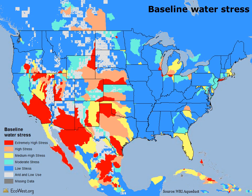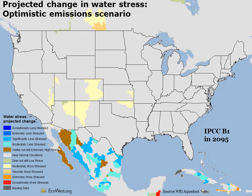You can see that the west is home to most of the highest stress areas. The Aqueduct tool also lets you show projections for the future based on different greenhouse gas emissions models.